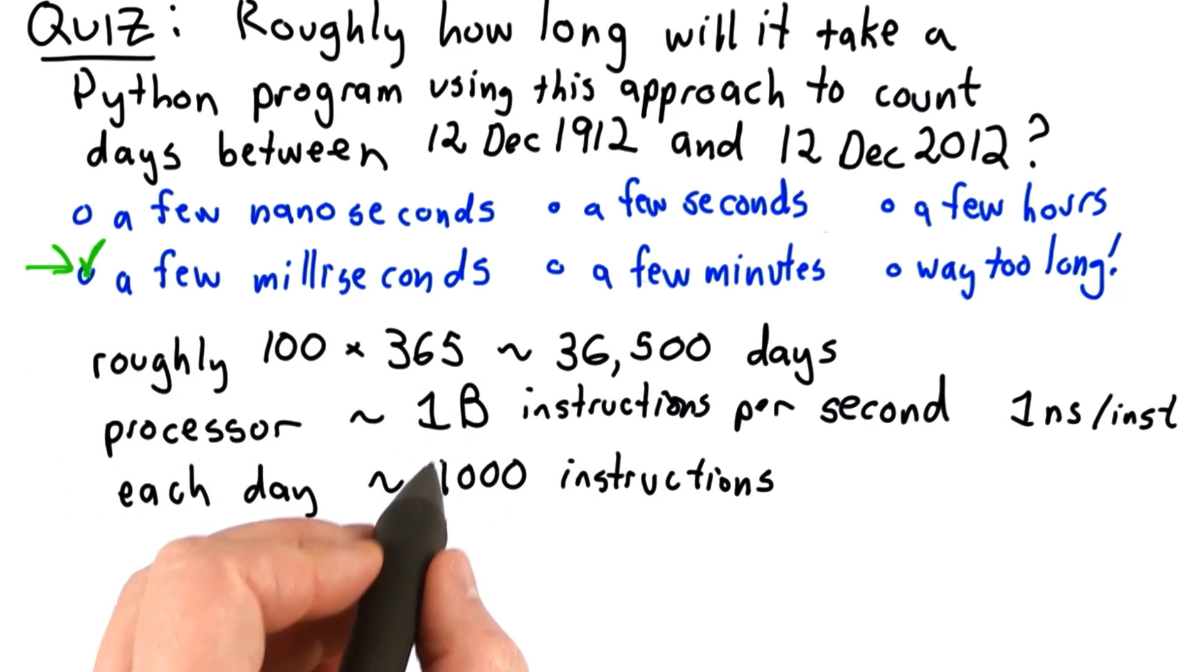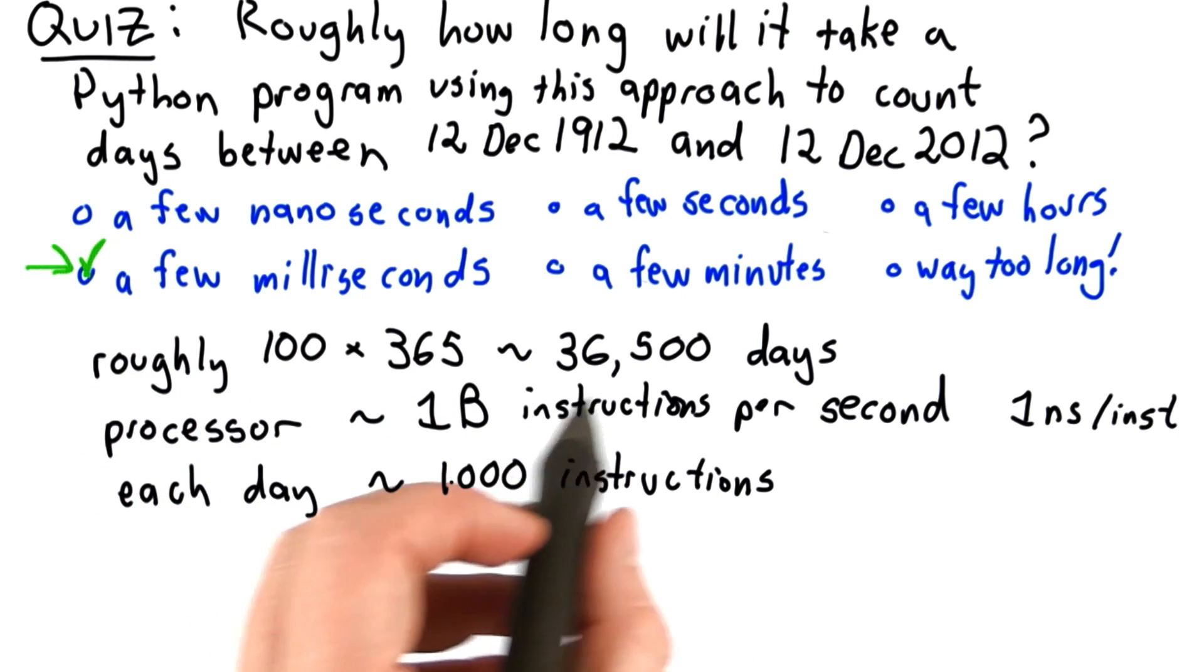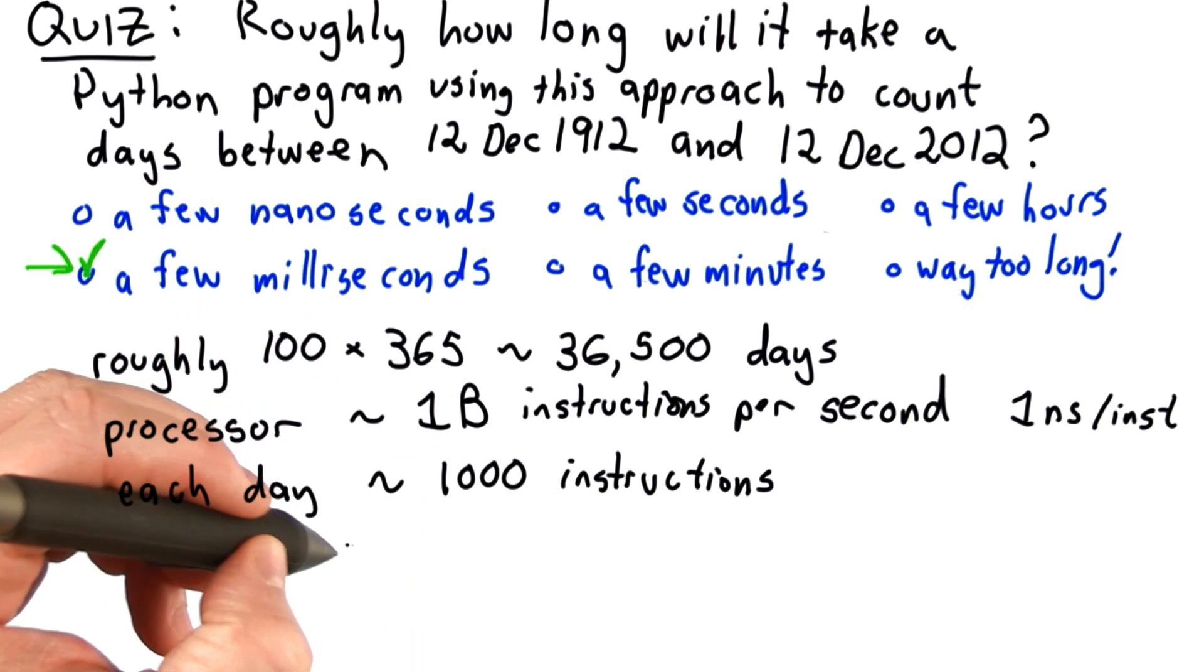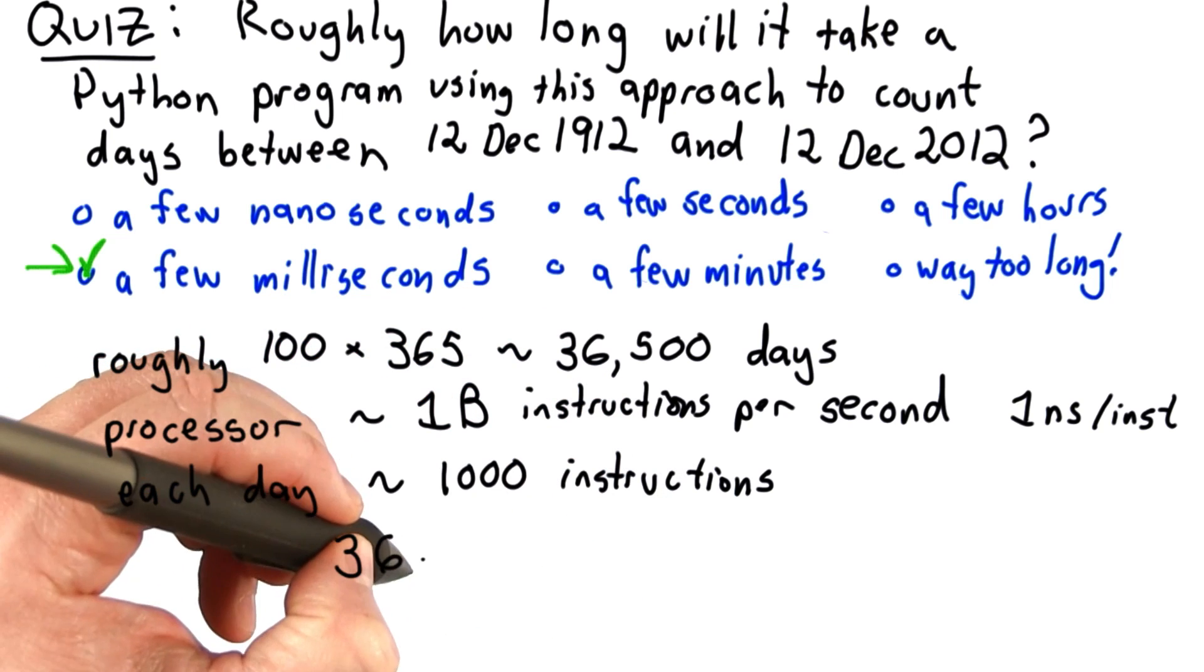So that means we need 1,000 instructions times 36,000 days. So we need about 36.5 million instructions total.